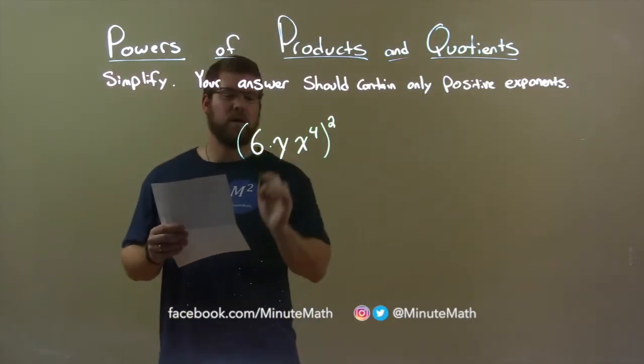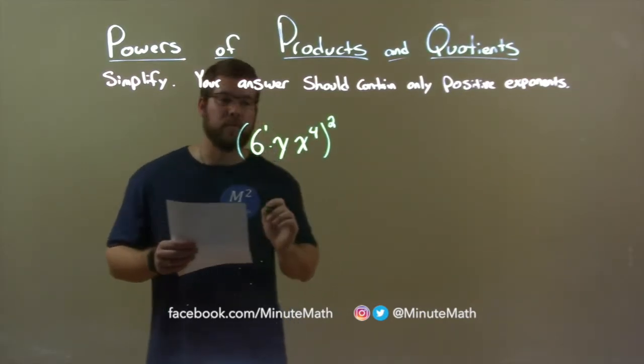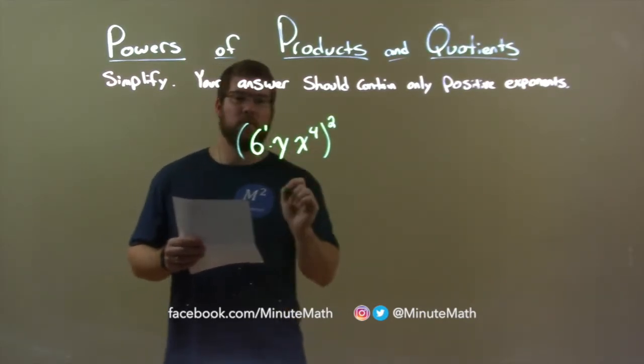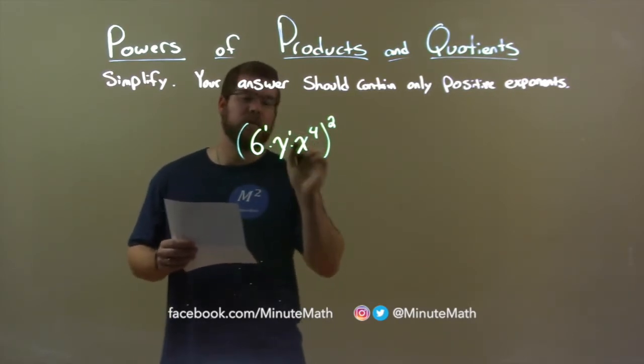Well we know that 6 and y are separated by multiplication, and 6 is really raised to the 1st power. y and x to the 4th are also separated by multiplication, and y is also raised to the 1st power.